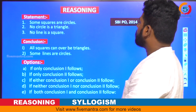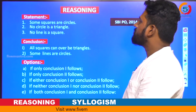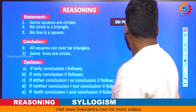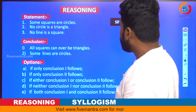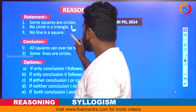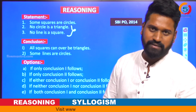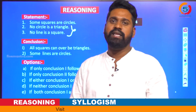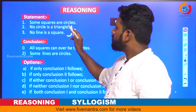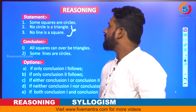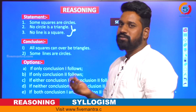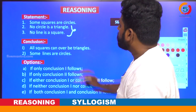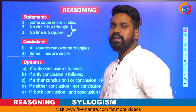The statements given are: some squares are circles, no circle is a triangle, no line is a square. Observe the difference here — two universal negative statements are given. In previous questions, only one universal negative statement was given, but here two universal negatives and one particular positive statement are given.